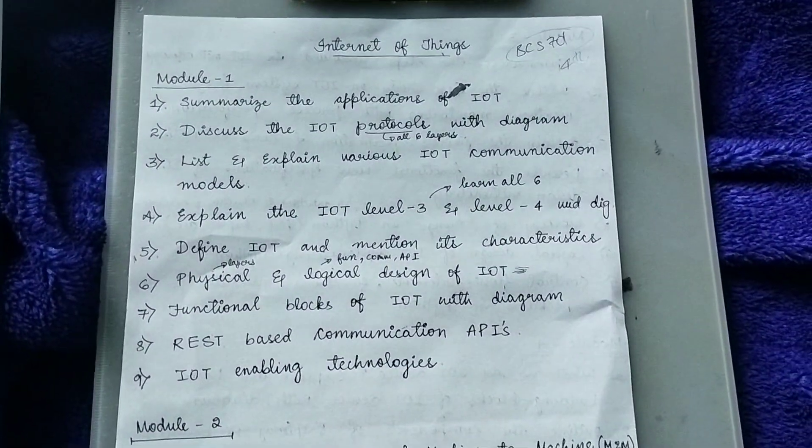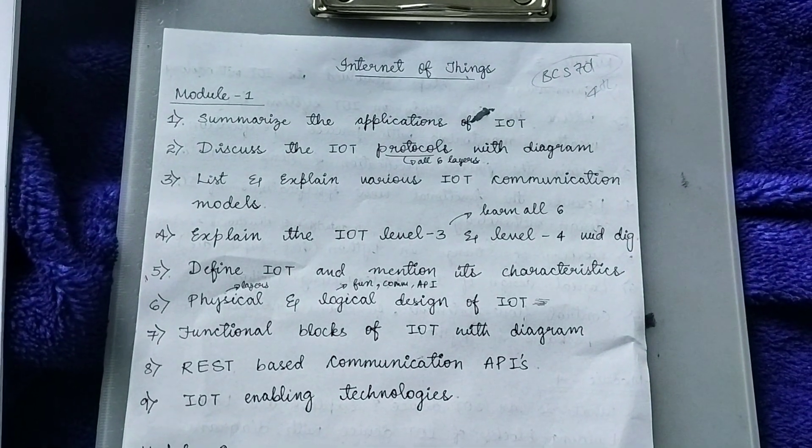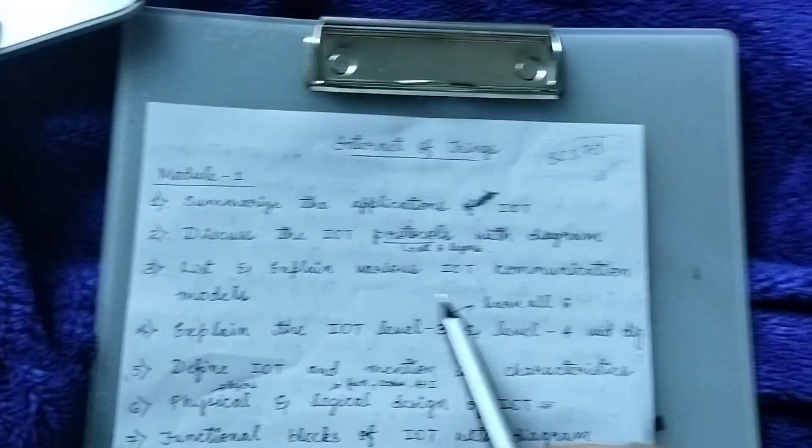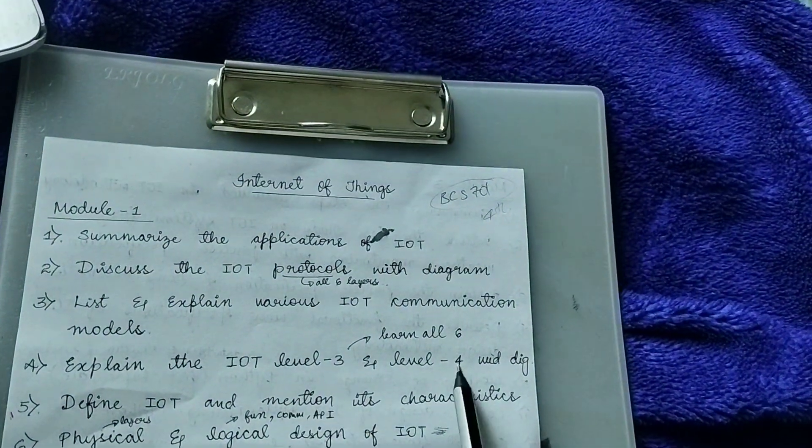Here is the first module. Please take a screenshot. One, two, three. And here one question I have written, like there is one question which is asking us to explain level three and level four only.